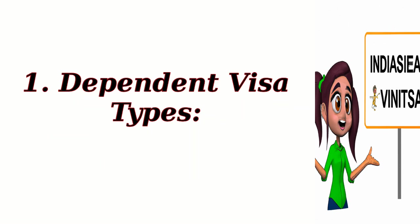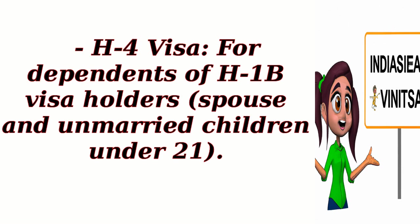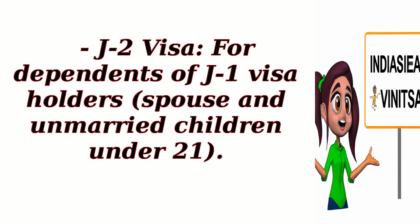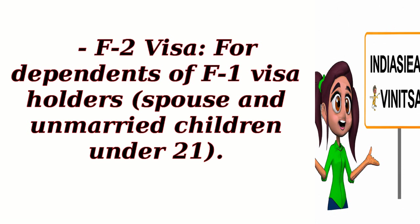Dependent Visa Types: H-4 Visa, for dependents of H-1B visa holders — spouse and unmarried children under 21. L-2 Visa, for dependents of L-1 visa holders — spouse and unmarried children under 21. J-2 Visa, for dependents of J-1 visa holders — spouse and unmarried children under 21. F-2 Visa, for dependents of F-1 visa holders — spouse and unmarried children under 21.